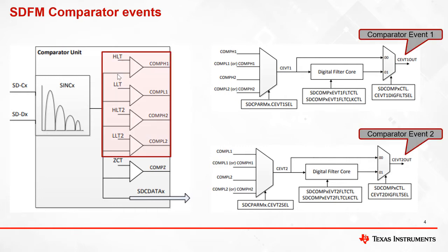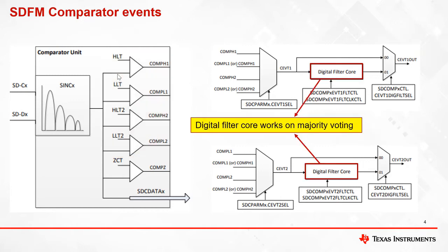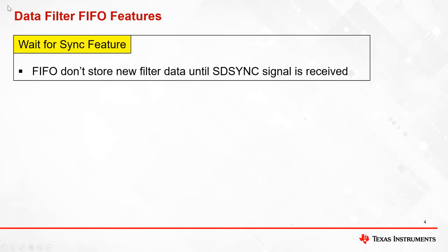Comparator filter events highlighted in this slide can source both comparator event 1 and event 2. These events can be filtered using a digital filter core if necessary. It is important to note that this digital filter core works on majority voting.